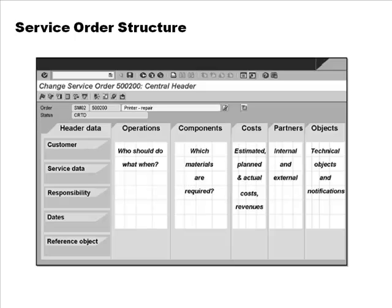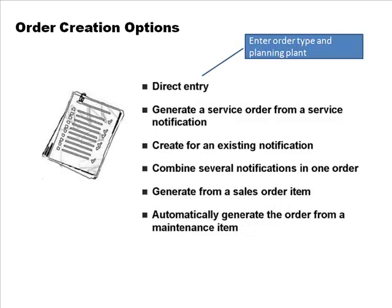The structure of the service order includes header information: the customer, what service is required, who is to perform it, the dates, and the reference object. It also includes the various operations involved, what materials are needed, estimated and actual costs, revenues (since this is customer-facing), the people involved, and all the objects for which service is being provided.